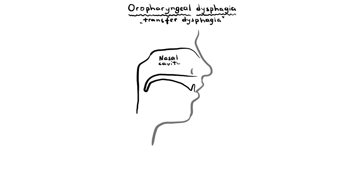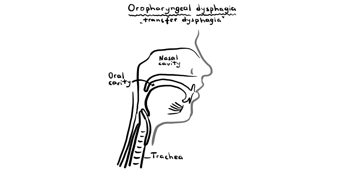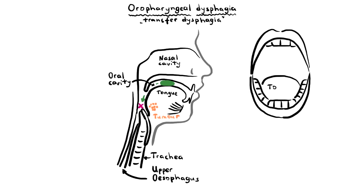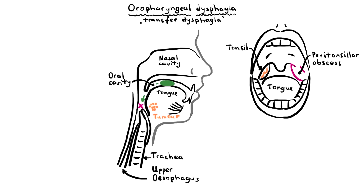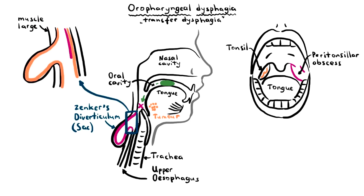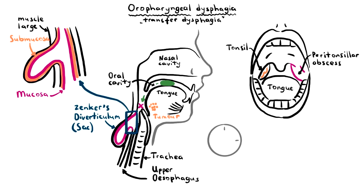Oropharyngeal dysphagia occurs when the patient is unable to transfer the food bolus from the mouth into the upper esophagus by swallowing. Structural or obstructive causes include tumours of the tongue and tonsils, or a peritonsillar abscess — a quinsy. These pathologies cause an internal obstruction leading to difficulty passing solids more so than liquids. Zenker's diverticulum is an acquired sac-like pouching of the mucosa and submucosa layers, originating from the pharyngoesophageal junction, and should be considered when undigested food is brought up several hours after a meal or if a patient reports hearing a gurgling noise in the chest.